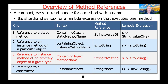The third type of method reference is a reference to an instance method of an arbitrary object of a given type. In this case, we would have the containing type::methodName. So an example might be where we'd use String::toString, where toString is not a static method — it's a so-called instance method. The corresponding way of writing this with Lambda expression syntax would be s -> s.toString().